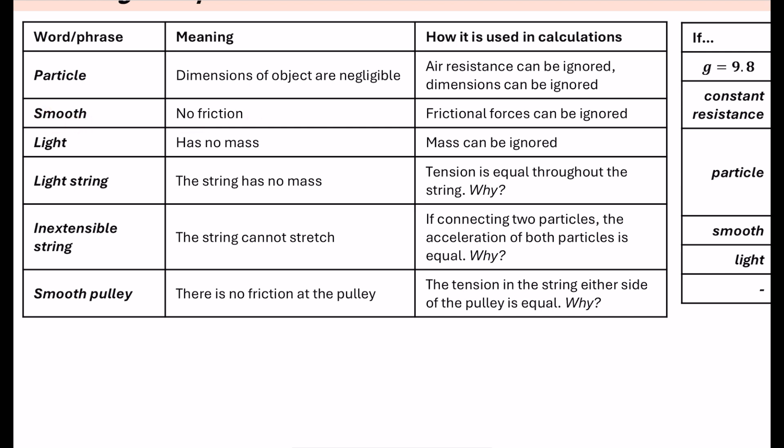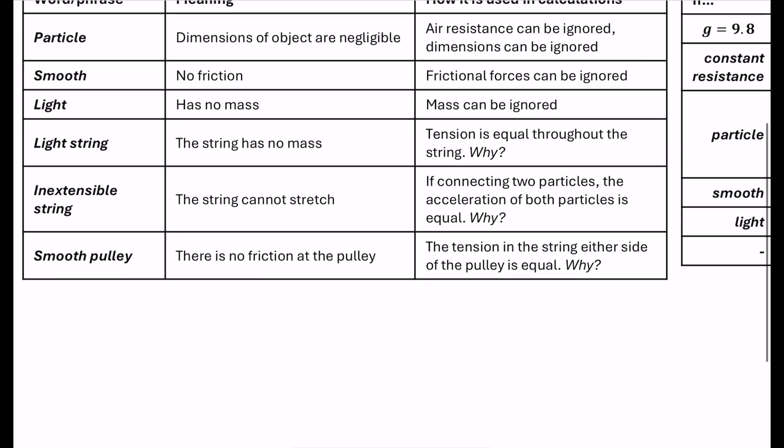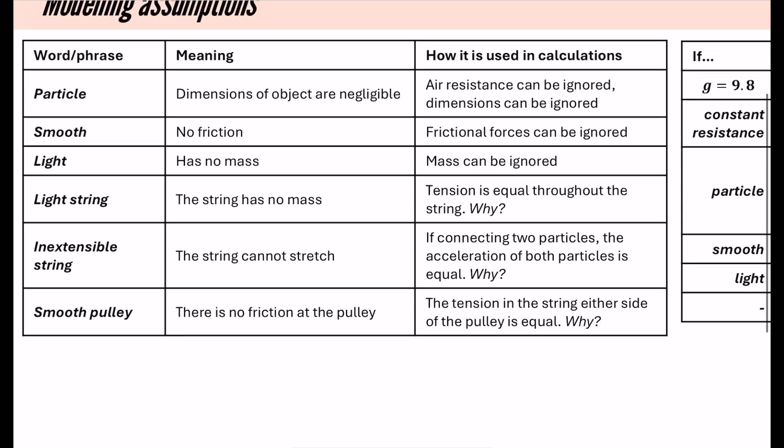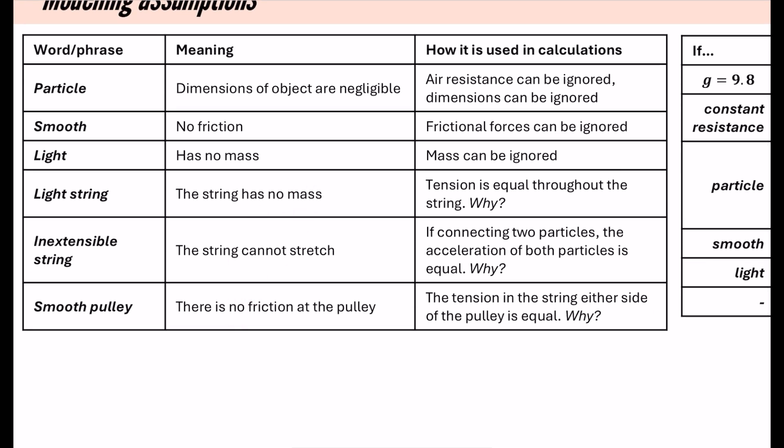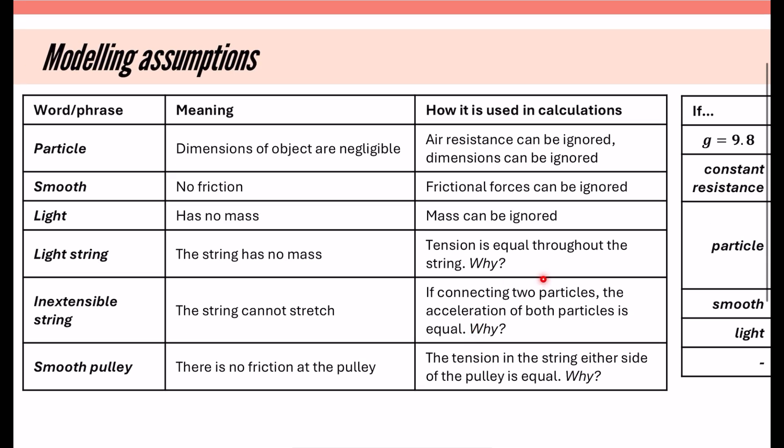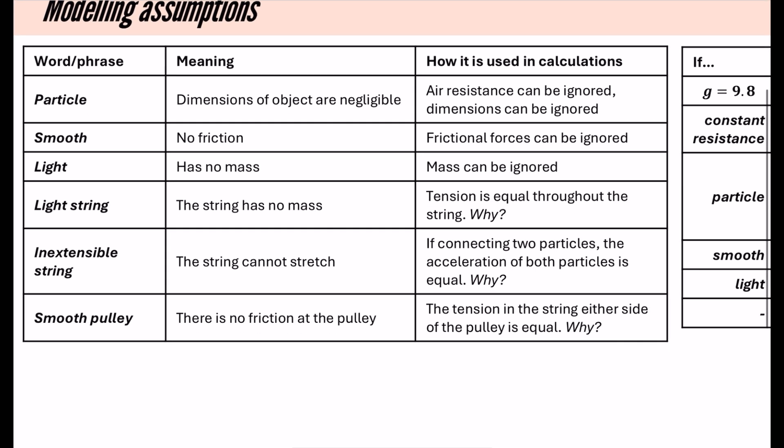Of course, if something is smooth, it means there's no friction and we can ignore the frictional forces. Light, of course, meaning that it has no mass, so we can ignore its mass. But then these are the interesting ones because this is where I think everybody knows the meanings of these, but I don't think that they necessarily know this part, which is how it can be used or how we use it in our calculations. And these are mostly going to be for things with connected particles.